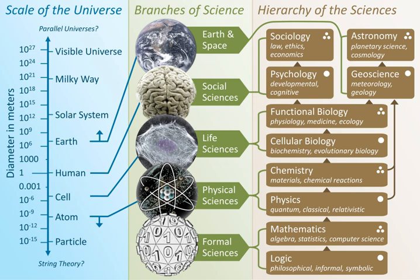The branches of science, also referred to as sciences, are commonly divided into three major groups. Formal sciences: the study of mathematics and logic, which use an a priori, as opposed to factual, methodology.